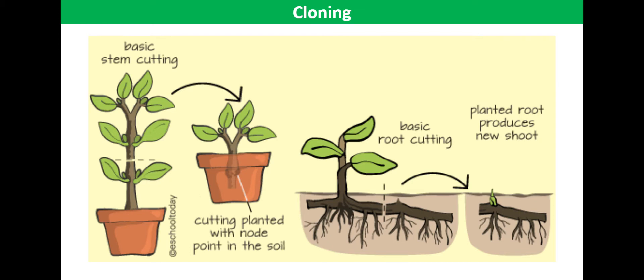Large scale cloning by taking cuttings can be time consuming and needs a lot of space. Also, some plants do not respond well to taking cuttings. Many commercially grown house plants are cloned using tissue culture techniques instead.